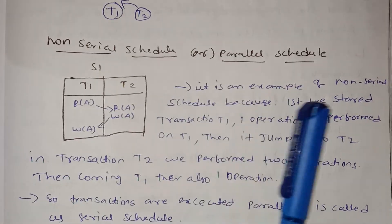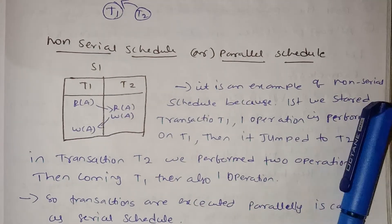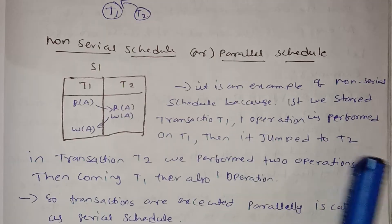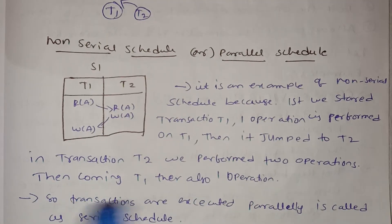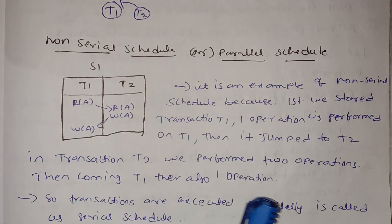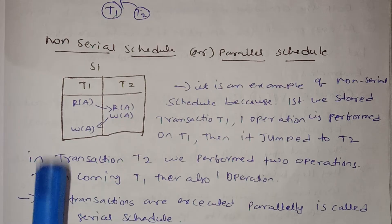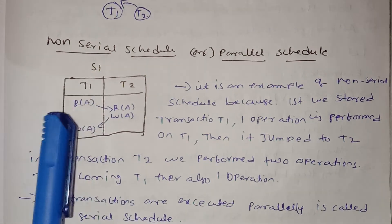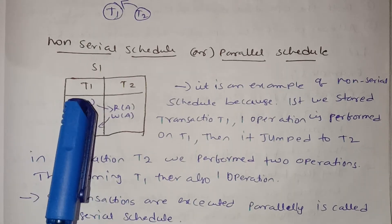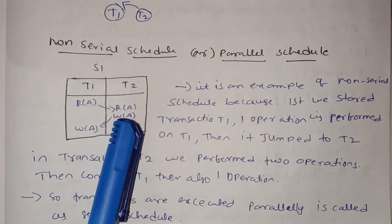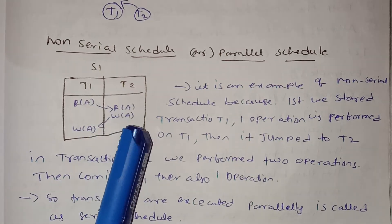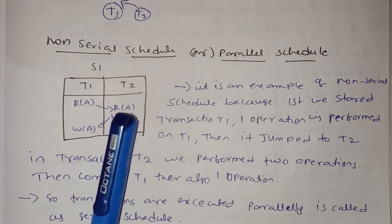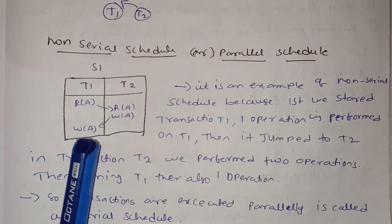For the non-serial schedule example: first we start transaction T1 and the first operation is performed on T1, then it jumps to T2 where two operations are performed, and then it comes back to T1 where one more operation is performed. The read operation of T1 is performed first, then two operations in T2.